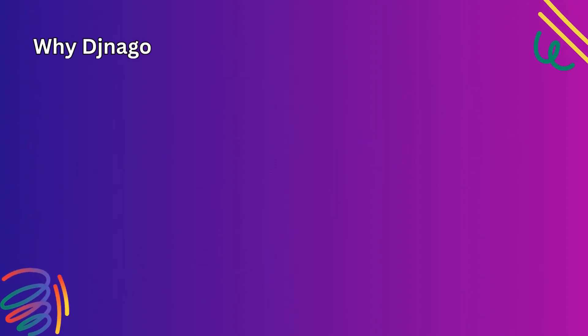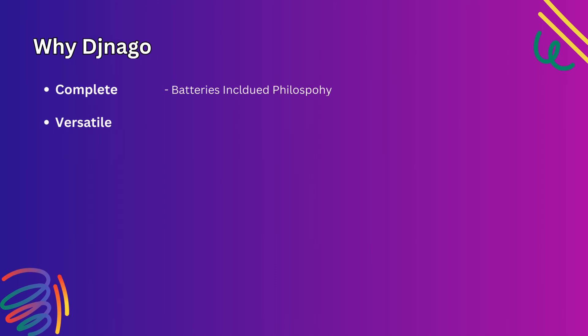Why do we need Django? With Django, you can take web applications from concept to launch in a matter of hours. Django takes care of much of the hassle of web development so that you can focus on writing your own app without needing to reinvent the entire wheel. Django is complete because it follows the 'batteries included' philosophy and provides almost everything developers might want out of the box. Django is also versatile — you can use it to build any type of website, from content management systems to social networks and news websites.